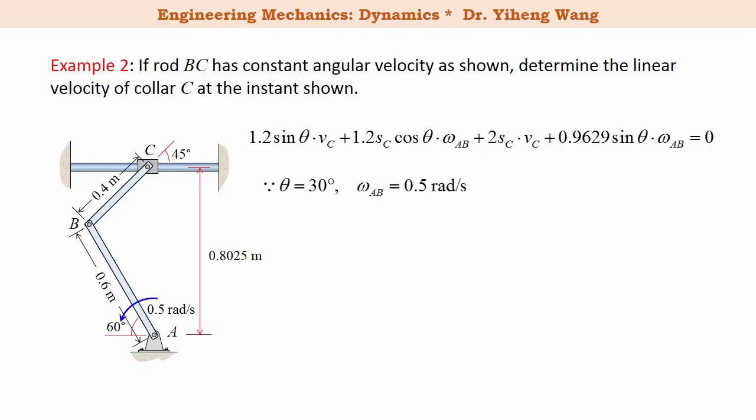omega is a given 0.5 radian per second. Using trigonometry again, we can solve for S_C at this current orientation, and then we can solve for V_c. Negative sign indicates the direction of V_c is to the left.